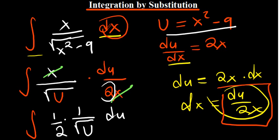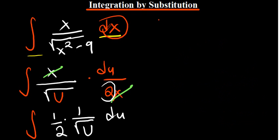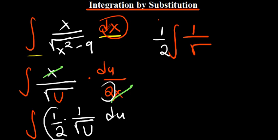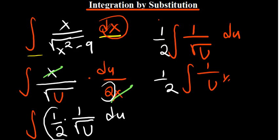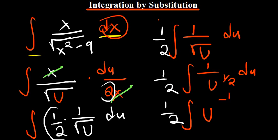Now we are trying to determine the integral of that. Whenever you have a constant, you can always remove it outside the integral and still get the same answer. So we get 1 over 2 multiplied by the integral of 1 over the root of u with respect to u. We know that a square root is the same as the power of 1 over 2, so we have 1 over 2 times the integral of 1 over u to the power 1 over 2 with respect to u. Taking it to the numerator, the power becomes negative, giving us the integral of u to the power negative 1 over 2.